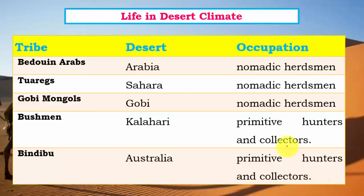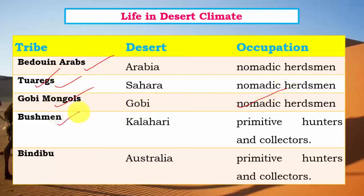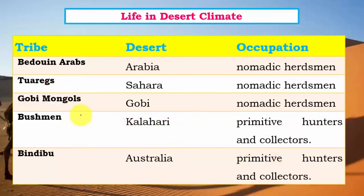Life in deserts mainly involves pastoralism wherever possible — nomadic herdsmen who move from region to region in search of pastures. They are called by different names in different regions: Bedouin Arabs in Arabia, Tuaregs in the Sahara (who have been associated with various conflicts in Libya and Mali), Gobi Mongols in the Gobi desert (a temperate desert, also nomadic herdsmen), Bushmen in the Kalahari (primitive hunters and collectors), and Bindibu in Australia (also primitive hunters and collectors). Remember these names — they are important for match-the-following type questions in prelims.